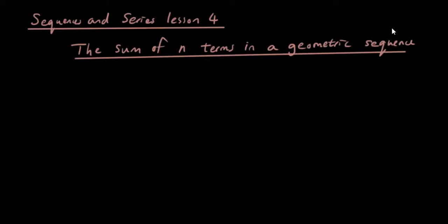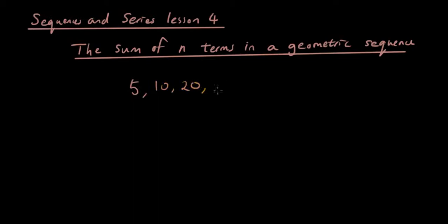So how do we do it? Well firstly let's make up a random geometric sequence. Let's start with the number 5 and multiply by a factor of 2 every time. So 5 times 2 is 10, 10 times 2 is 20, 20 times 2 is 40 and so on. This is our geometric sequence where we're multiplying by 2 every time to get to our next number.